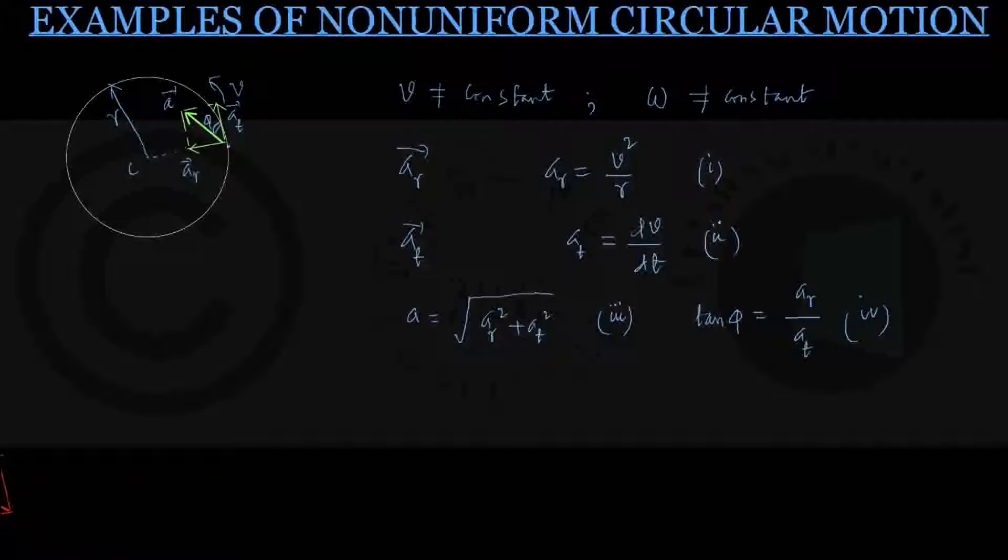So equation number 1 to 4 describe both accelerations, two accelerations possessed by the particle in nonuniform circular motion. We have found them, added them, and found the resultant, and also defined the angle made by A with the tangential direction. At this point, let us recall Newton's second law of motion, which tells that F is equal to ma.